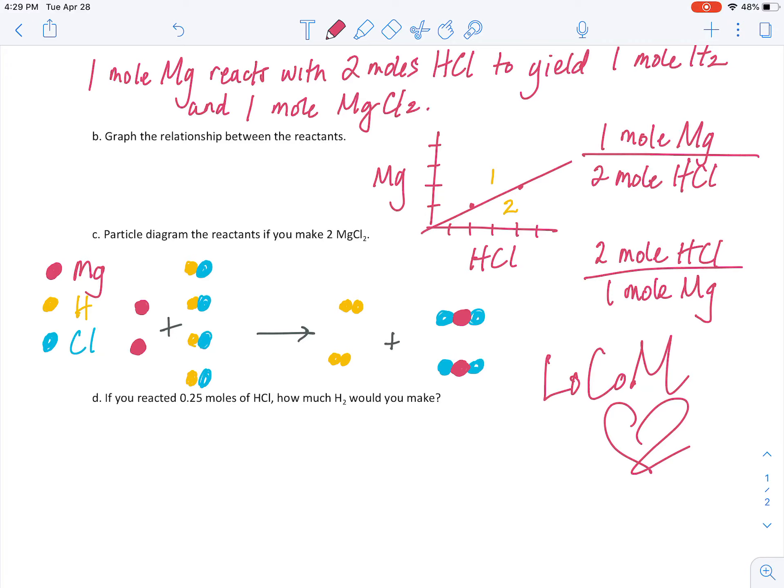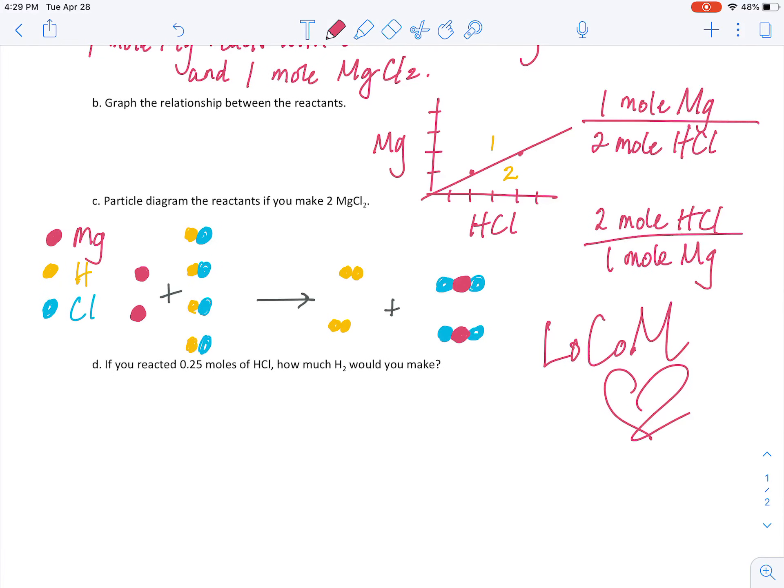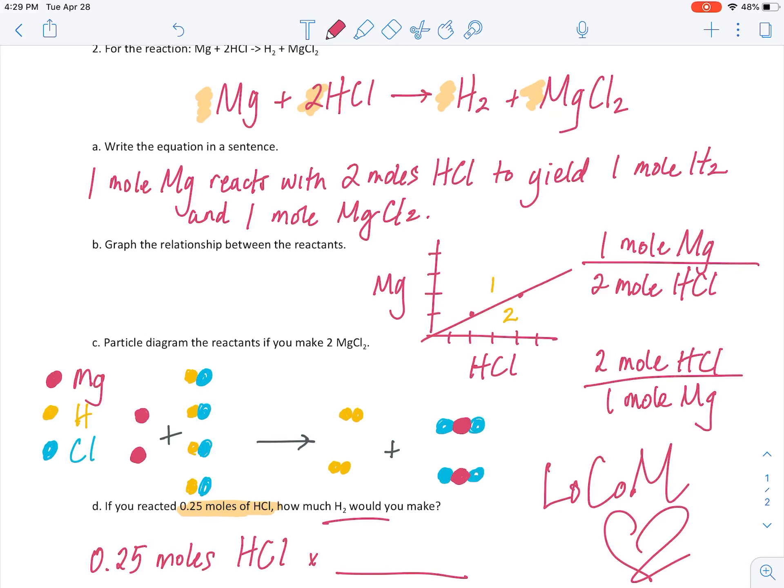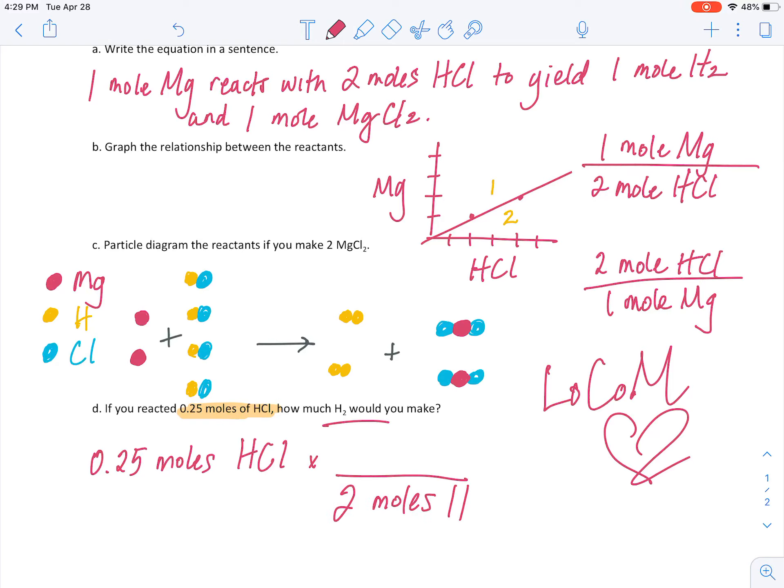So, we got visual, we got graphical, we got mathematical. So, what we're going to do is, the question is asking, if you reacted 0.25 moles of hydrochloric acid, HCl, how many moles of hydrogen would you make? So, we always start with our given, and then we're asked to solve for the moles of hydrogen. So, we're going to look at a mole ratio, using our balanced chemical equation, that compares HCl to hydrogen. And, if you look up here, we know that for every two moles of hydrochloric acid, we produce one mole of hydrogen gas.